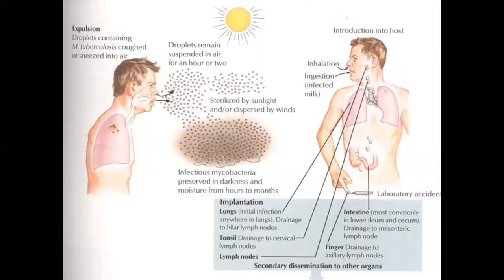When a patient with tuberculosis coughs out bacilli into droplets in the air, if the air has proper exposure to the sun, the droplet remains suspended for only about an hour or two. But if the droplet is present in an area that is dark and moist, the bacilli can survive for hours to months. And if there is wind, the droplet nuclei can get dispersed to other places.